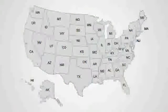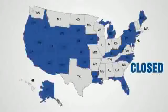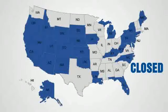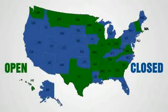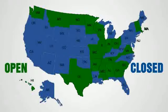Here's the list of states. If you live in one colored blue, you're in a closed state and must register Republican as soon as possible. If you live in one colored green, you do not. But don't forget to go to the primary or caucus on the right day.